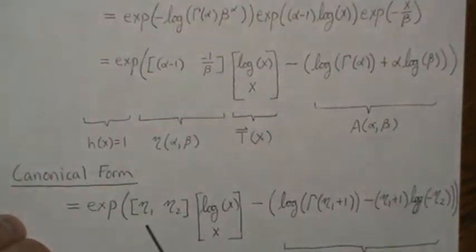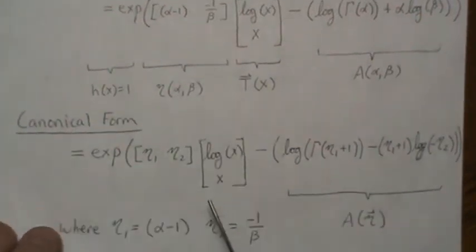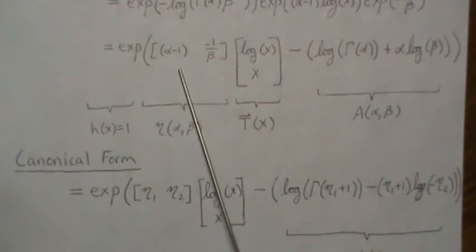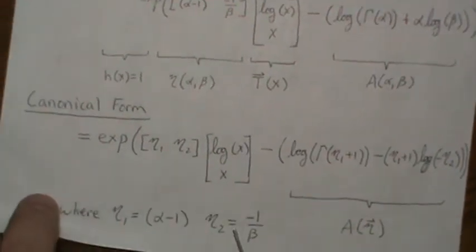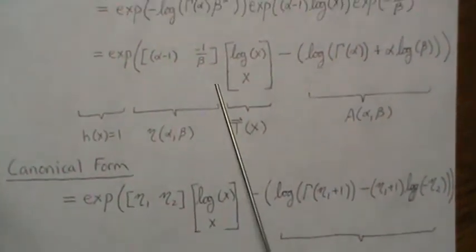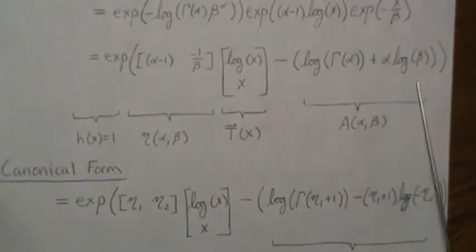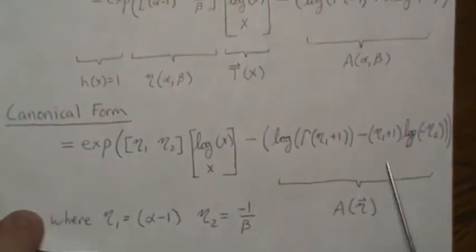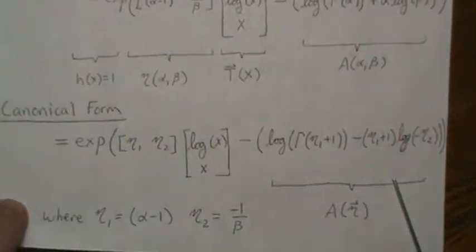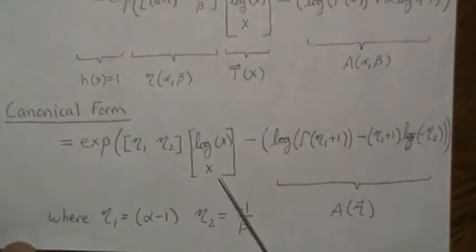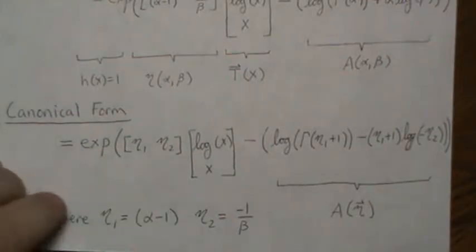So eta-one is going to be alpha minus one and eta-two is going to be negative one over beta. If you plug those into the log partition you get back the original expression. The beauty of having it in canonical form is that partial derivatives of the log partition end up being moments of our sufficient statistics, and that's what we're going to show.